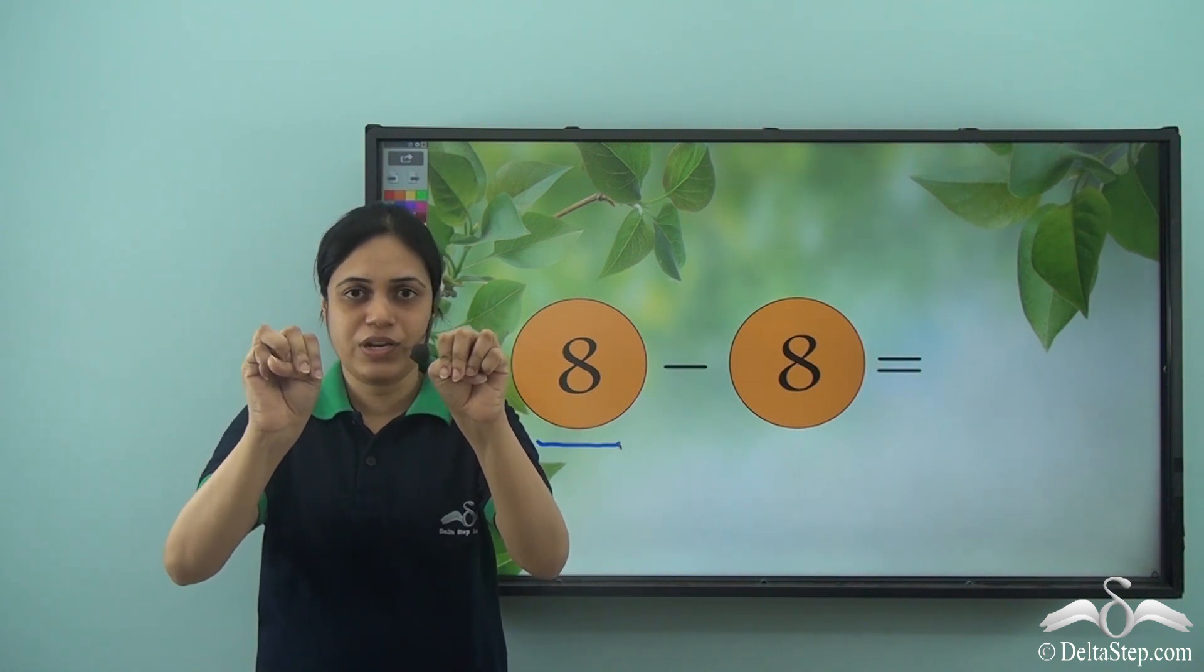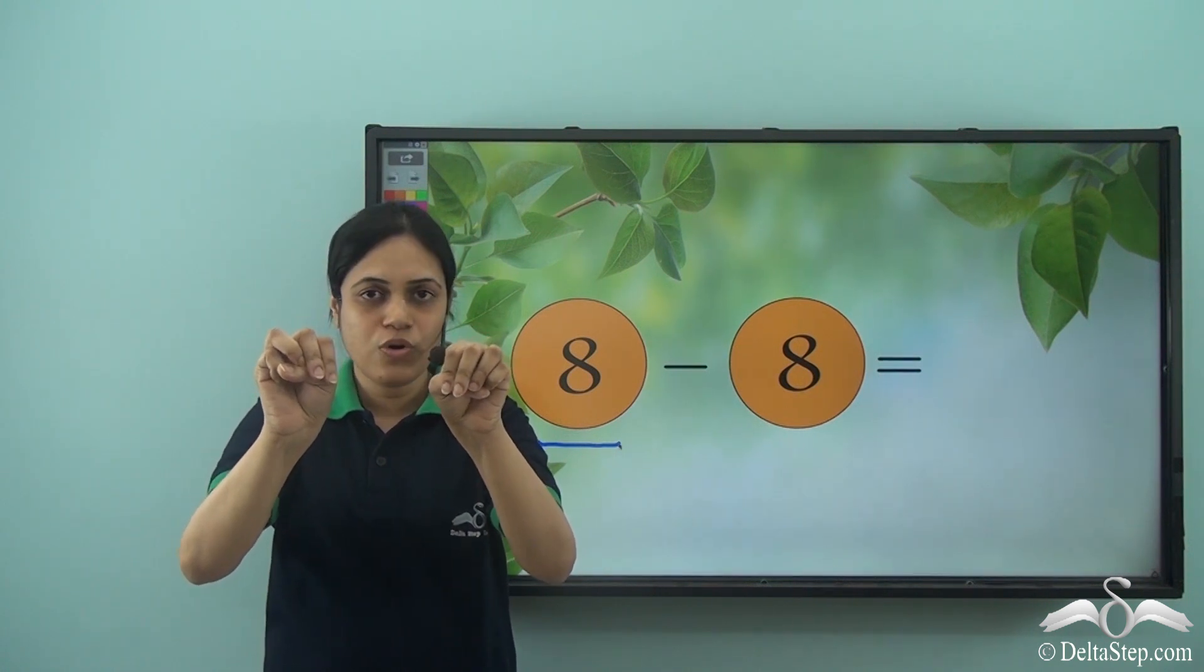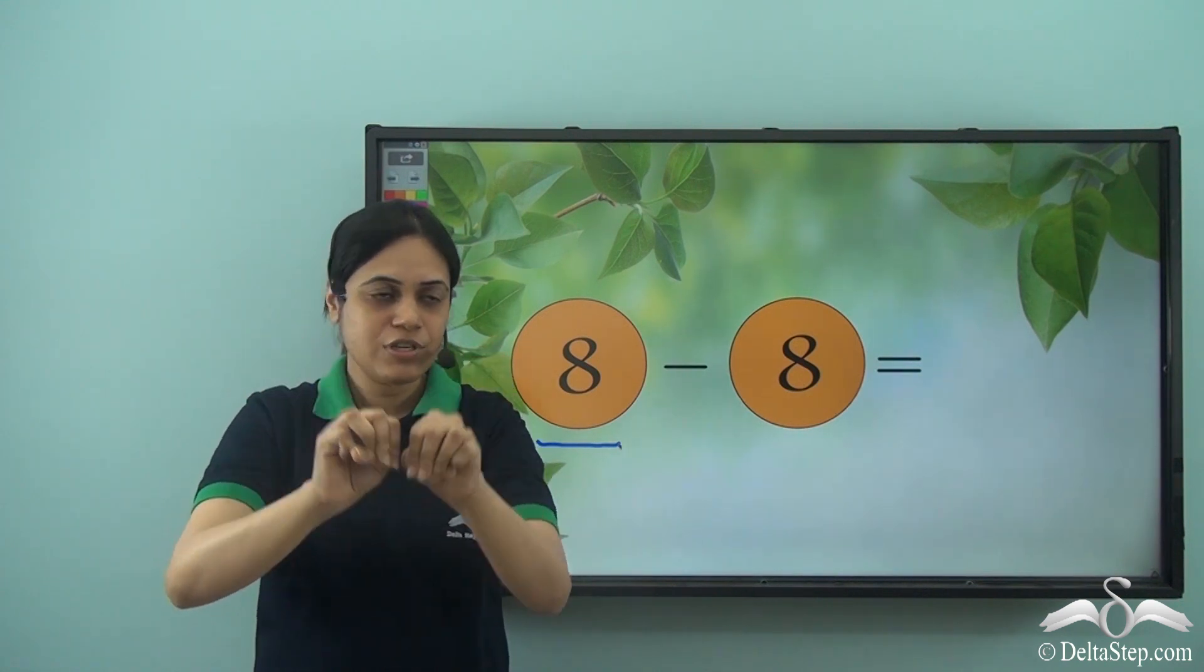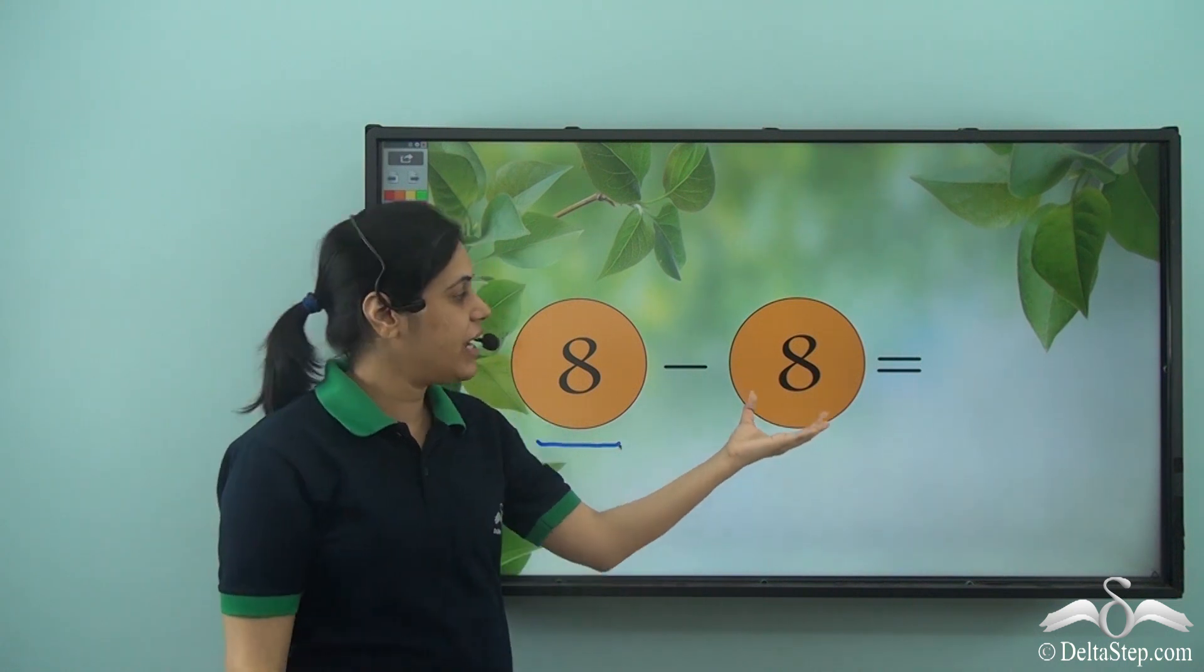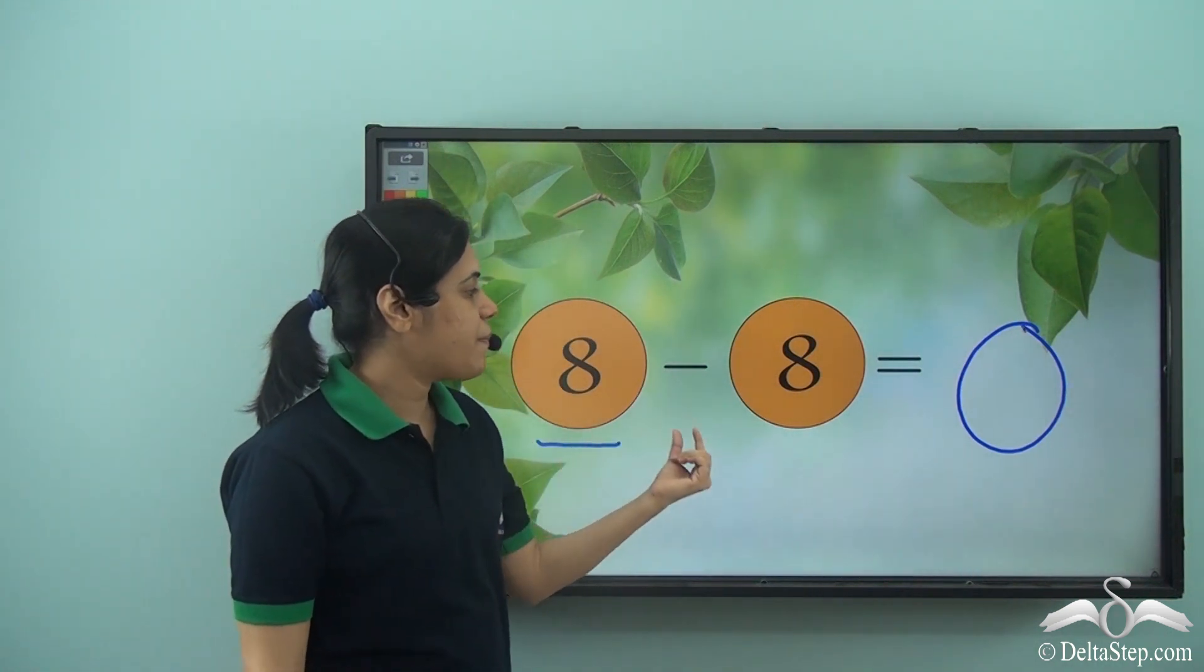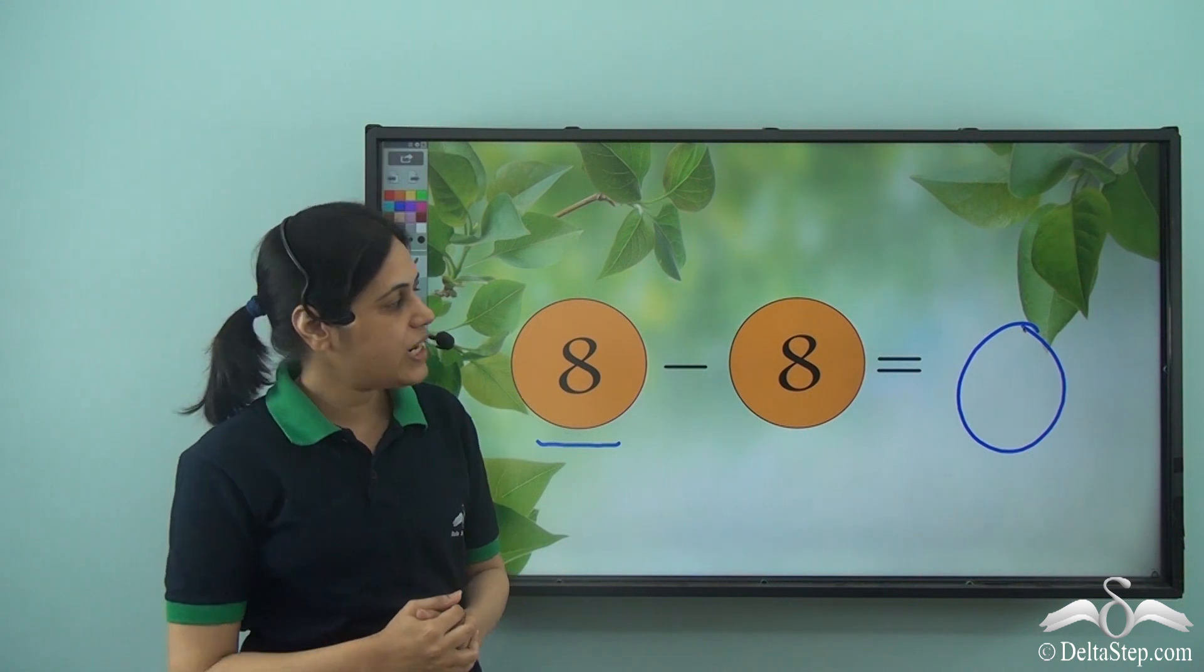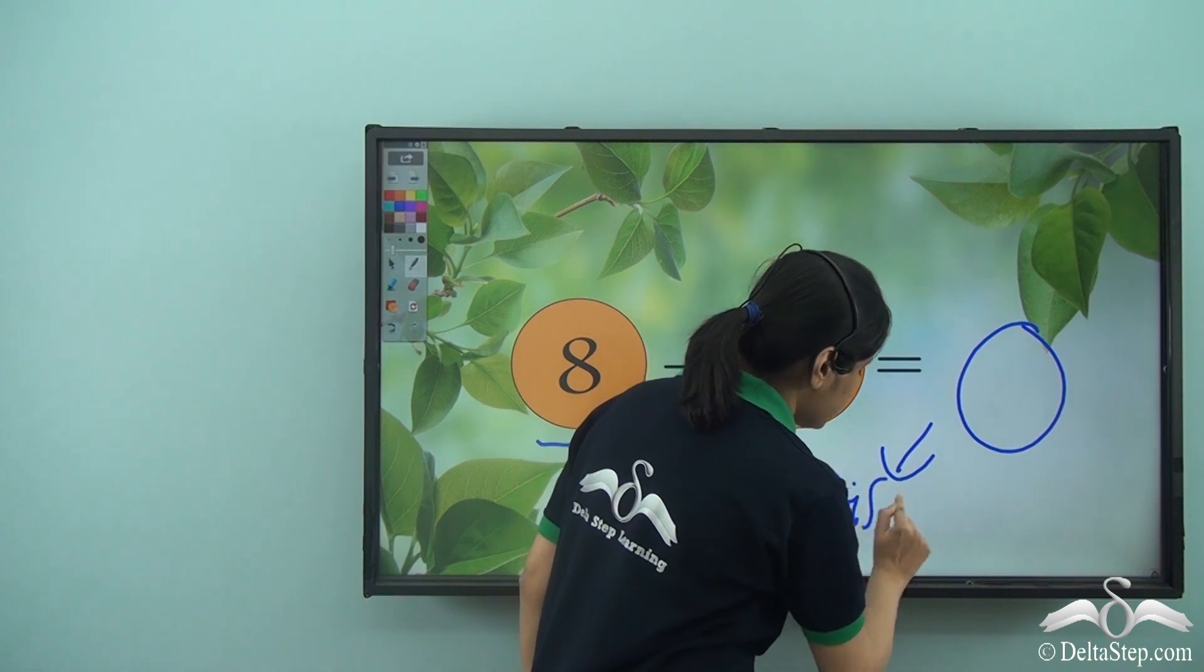How many fingers are open now? No fingers are open, right? Can you see any fingers open? No. So there are no fingers or zero fingers left. So when I remove, subtract or take away eight from eight, I get zero. So eight minus eight gives us zero. So this is the answer. This is the difference.